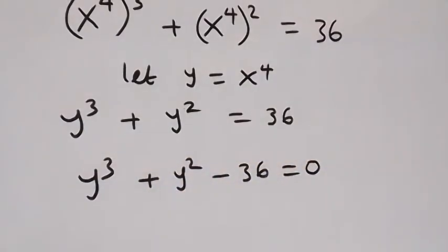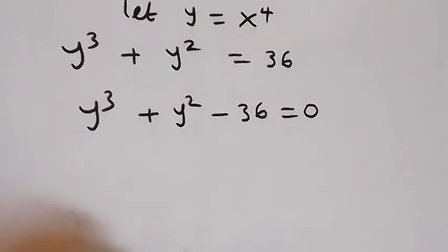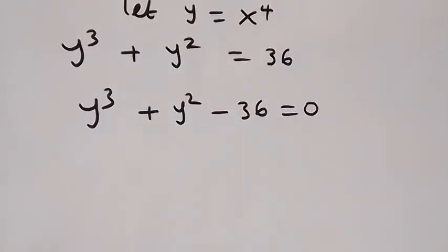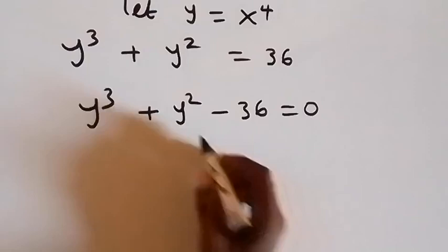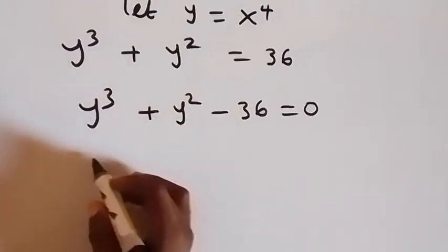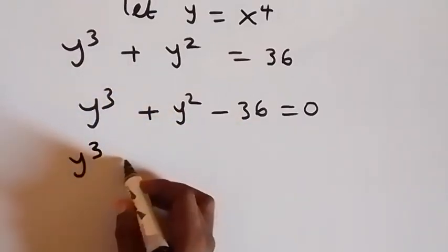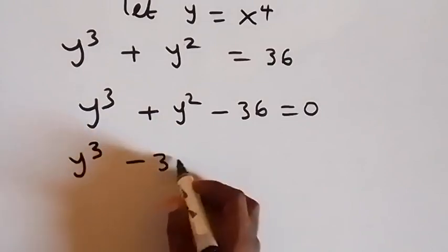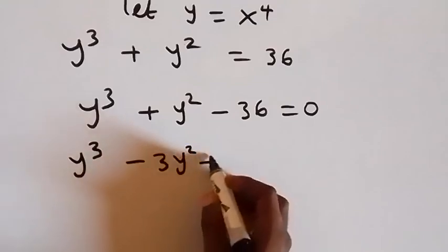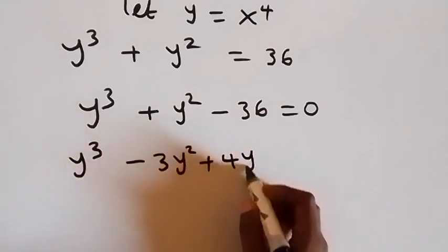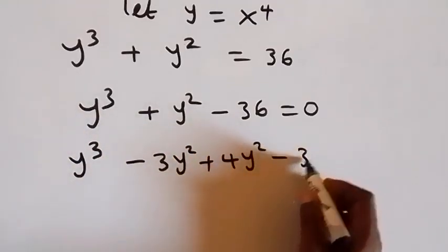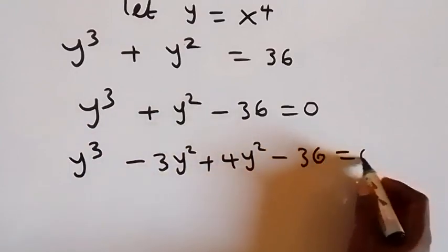Then from here, we can write y squared as minus 3y squared plus 4y squared, then minus 36 equals to 0.